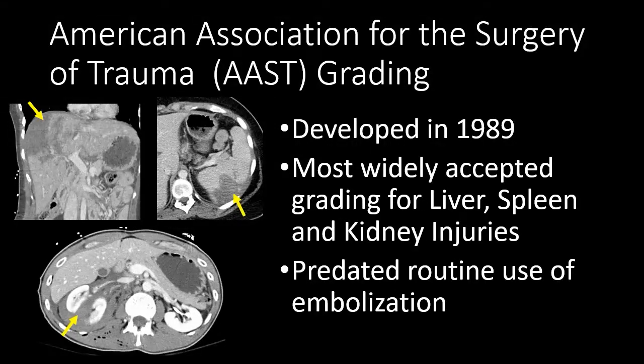The American Association for the Surgery of Trauma, or the AAST, is the most widely accepted grading system. It was initially developed in 1989 but was most recently revised in 2018. Its initial scale was before widespread availability of interventional radiology and the routine use of embolization, and the revisions do reflect the importance of embolization in management.